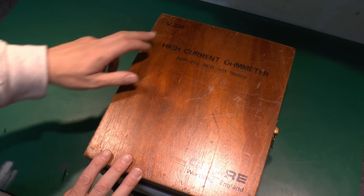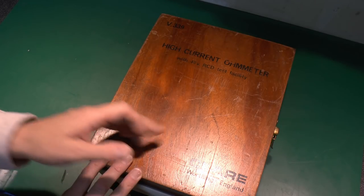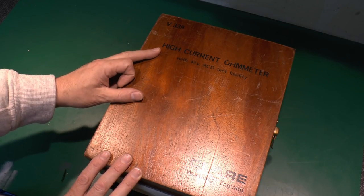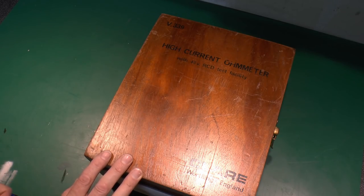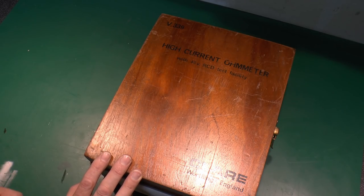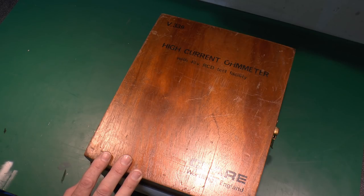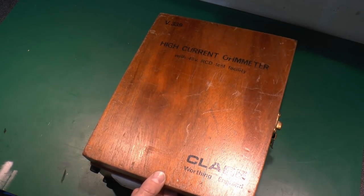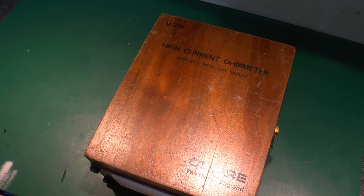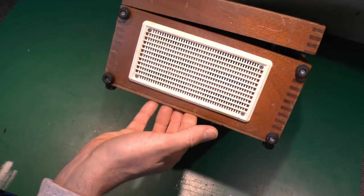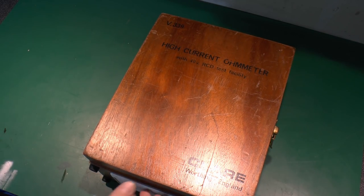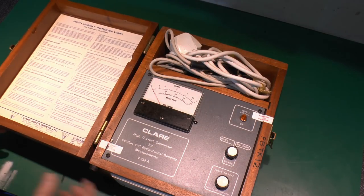So this is the thing we've got, and this is a V339, made by Clare, a company which is now part of the Seaward Group. Now notice this here is a high current ohmmeter, and it also has this 40 volt RCD test facility. Looking at the actual resistance measurement part of this, this is a relatively old piece of equipment. It comes in this wooden case with a hinged lid there. It's also quite a large and heavy item, quite substantial in size, and all it does is measure resistance, so it doesn't have any other fancy features.